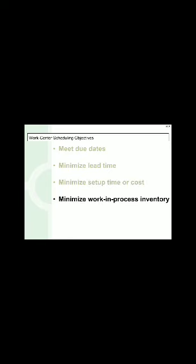A fourth objective is to minimize work-in-process inventory, since work-in-process inventory always increases the cost of production, and higher production cost makes it difficult to compete in the market. Fifth, we should maximize machine utilization because machines have a limited lifetime, and if a machine is not properly utilized it will raise the cost of production.